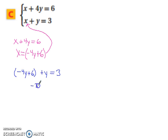We have negative 3y plus 6 equals 3. We're going to subtract 6 from both sides. So we've got negative 3y equals negative 3. So y equals 1.